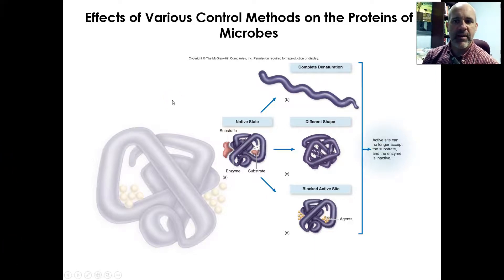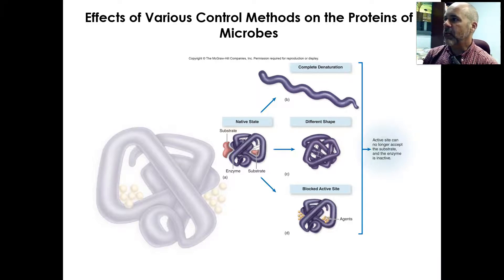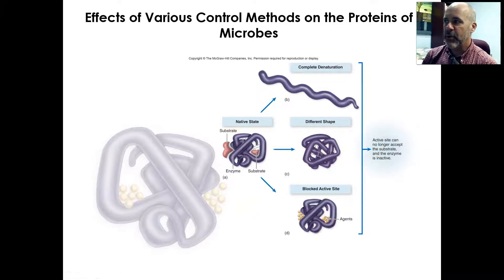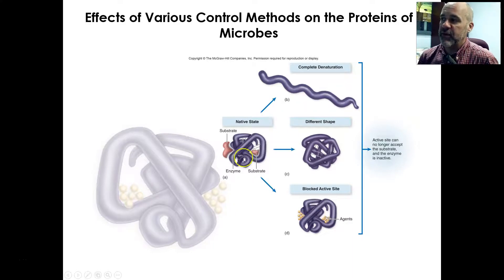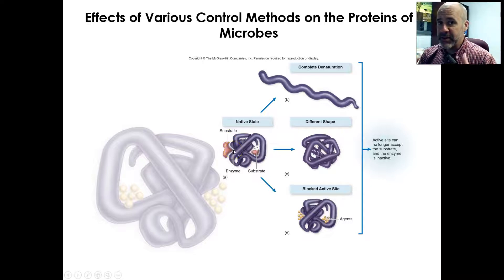In the last video clip we talked about the cellular targets for many control methods and we mentioned proteins — very often it's the proteins that are impacted in some way. This is a good diagram from your book because it shows how different control agents can impact protein. A protein has to be folded into its perfect three-dimensional shape in order for it to work. Here we're looking at a protein enzyme, and enzymes have substrates that bind to them, and then the enzyme changes those substrates and makes the product or products.